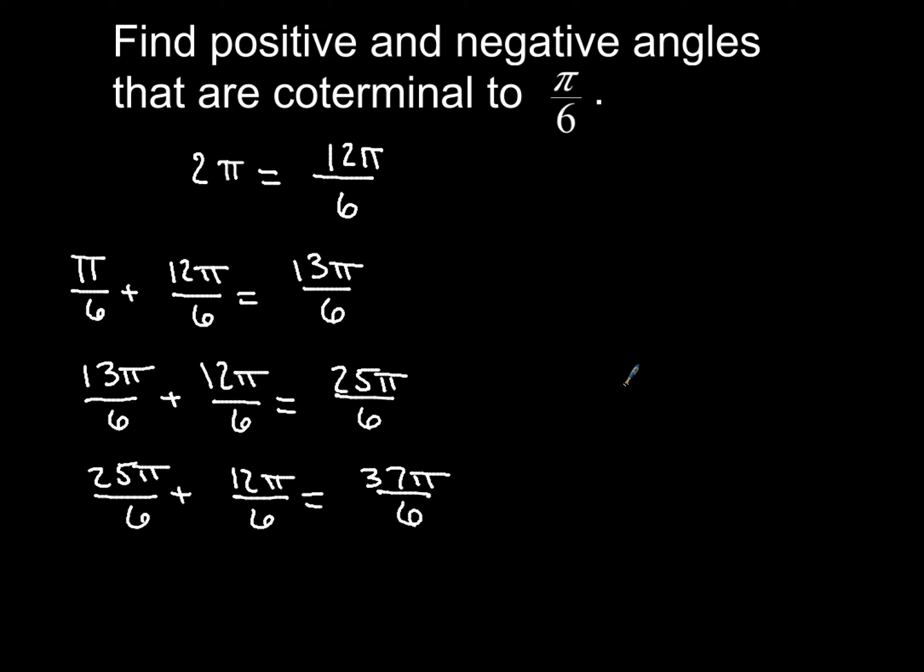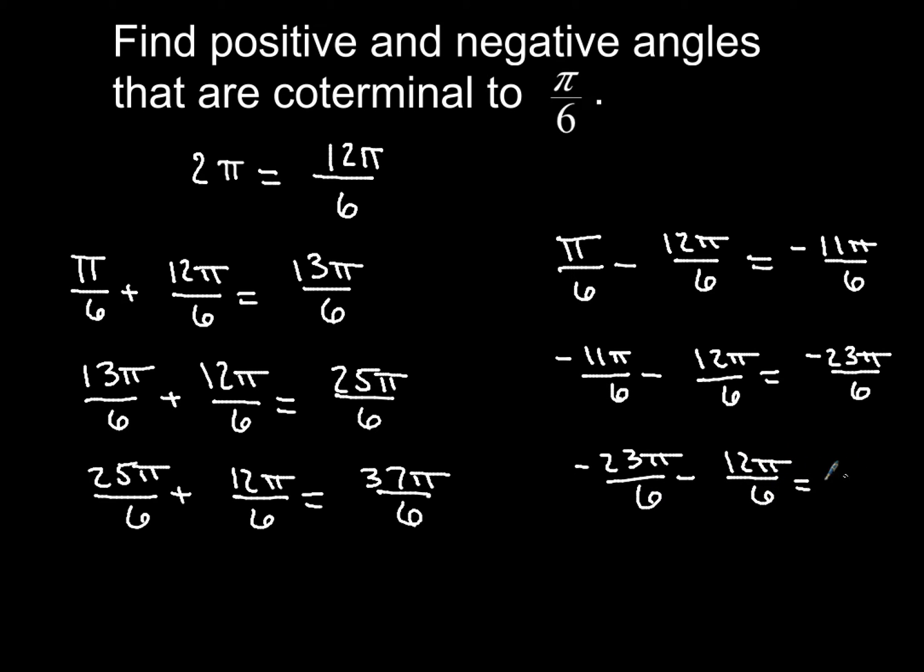But wait, say I wanted to go in a negative direction. So if I started out with π over 6 to start with, then I would just subtract 12π over 6. And when you do that, you end up with negative 11π over 6. But wait, we're not done. We're going to keep going here a little bit. So if you had negative 11π over 6, and you went around one more time, subtracting 12π over 6 again, this time you would end up with negative 23π over 6. And we'll do one more. So if you had negative 23π over 6 minus 12π over 6, you would end up with negative 35π over 6.